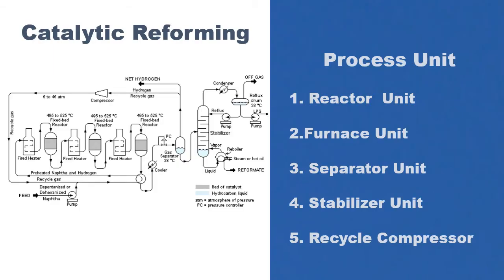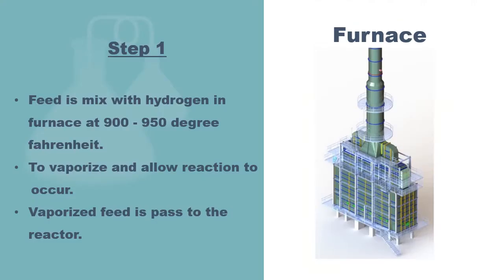There are many process units in a catalytic reformer. In this video, we will be discussing five process units, which are the reactor, furnace, separator, stabilizer, and recycle compressor. In the first step of this process, feed is first mixed with hydrogen in the furnace at 900 to 950 degrees Fahrenheit to vaporize and allow the reaction to take place.